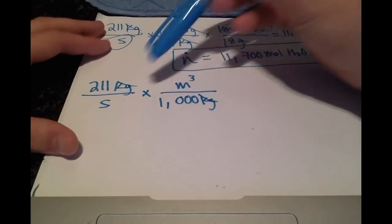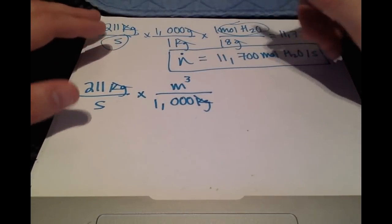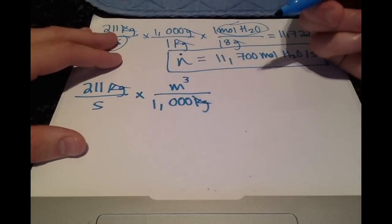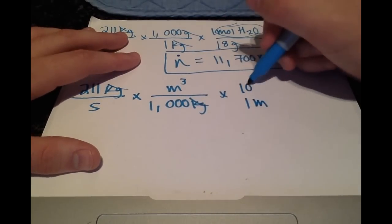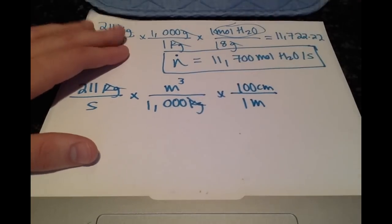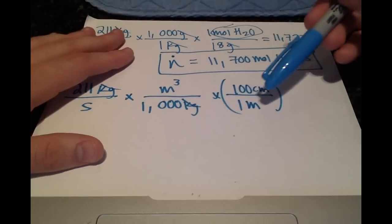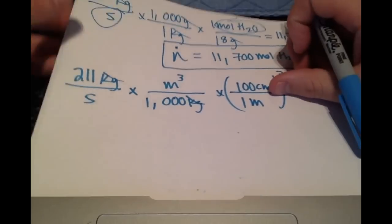So now we have the volumetric flow rate in meters cubed per second. But the question wants to know what the volumetric flow rate is in centimeters cubed per second. So for every meter, there are 100 centimeters. And let's not forget, this is volume, so we have to cube this whole thing, which will cube the units. We'll have meter cubed, centimeters cubed, and this 100 will also get cubed.